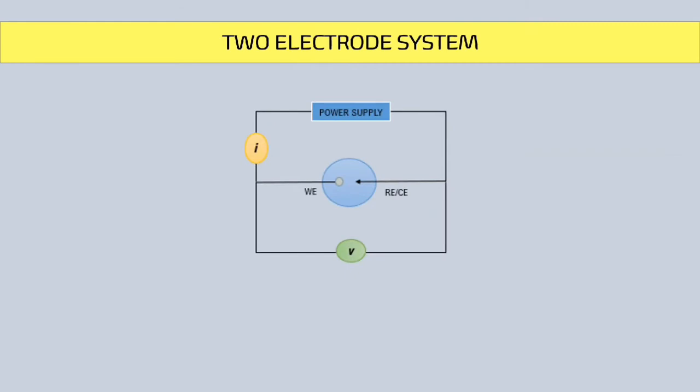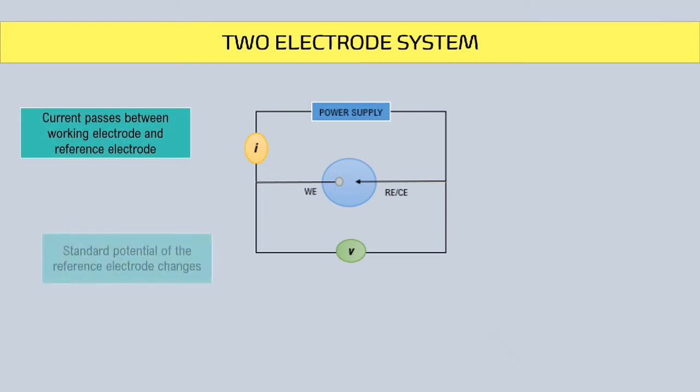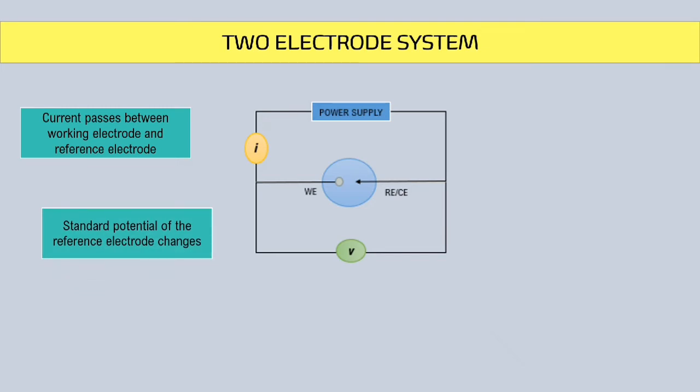Next will be the difference between two and three electrode systems. For a two-electrode system, the current passes through the working electrode and also reference electrode. Since current flows through the reference electrode, the standard potential of the reference electrode changes, and the polarization of the reference electrode takes place.